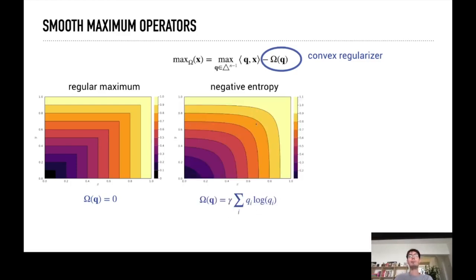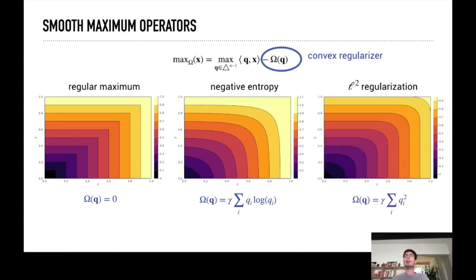But if you use the negative entropy here then this becomes much more rounded and does differentiate well, so there is some information in this curvature. Also a nice alternative, if you use the squared norm then you get something that behaves, if the difference is large, very similar to a regular maximum. But if the difference is very small then it becomes rounder, so it is smoother and so this you can also differentiate.